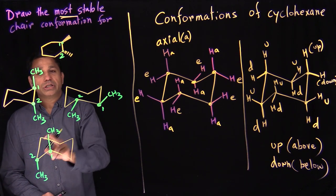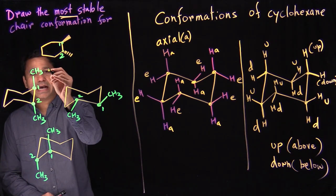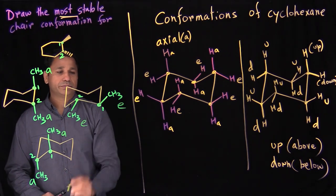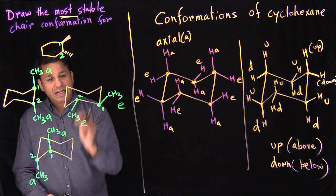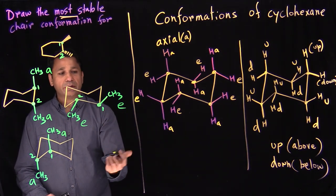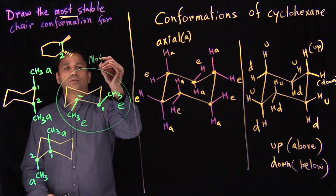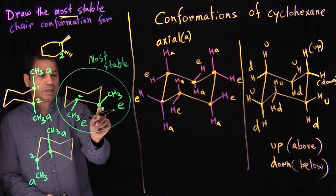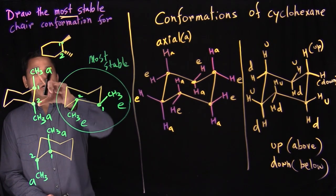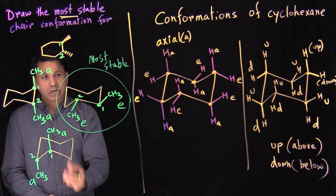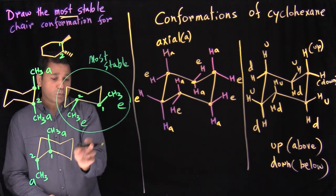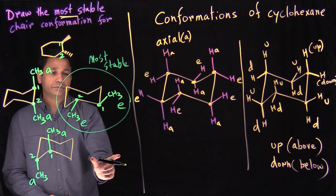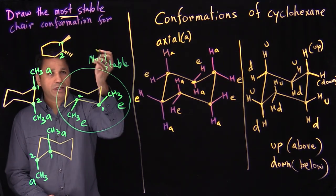Once you see repetition, you stop and compare. How many axial and equatorial positions do we have? One structure has two axial. Another has equatorial and equatorial. According to the rule, more equatorial and less axial makes it more stable. So the structure with two equatorial positions is the most stable chair conformation for 1,2-dimethylcyclohexane.